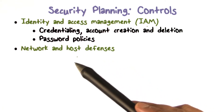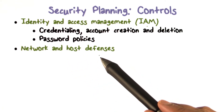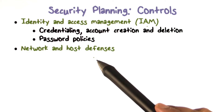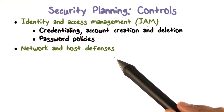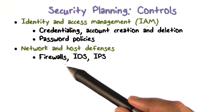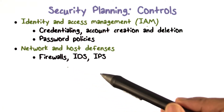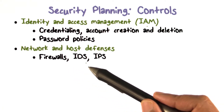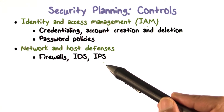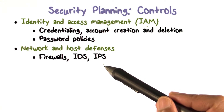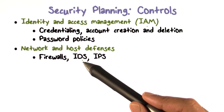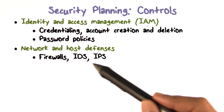We also have assets like networks, hosts, servers, and desktops, so we need defenses for those as well. We may have firewalls to control what comes into or leaves our network. We may have intrusion detection and prevention systems to look at network traffic or host activity and decide if something suspicious is going on.